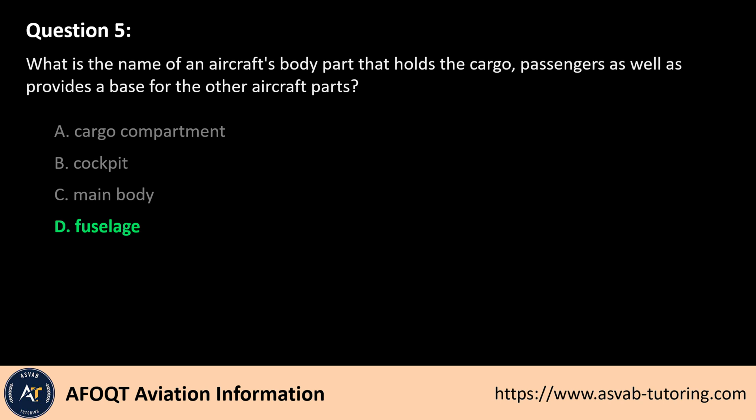The answer is D. The fuselage is the central body of an aircraft that houses the cockpit, passengers, cargo, and essential systems. It also serves as the structural base to which wings, tail, and engines are attached. The cargo compartment and cockpit are specific sections within the fuselage, while the main body is not a standard aviation term. Thus, the fuselage is the correct answer.